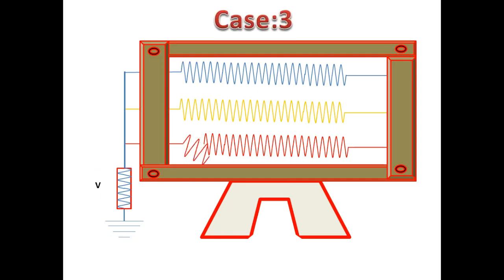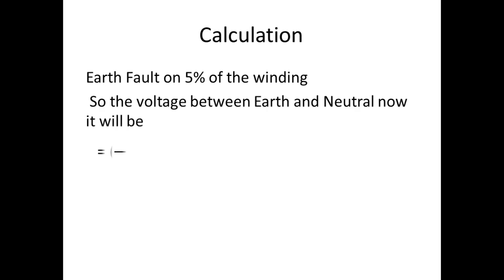Now we are going for one more case. Let us consider now at 5% of the winding has got earth fault. Now what will be the voltage across here? When we calculate, we got 0.635 kilovolts.